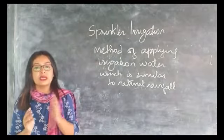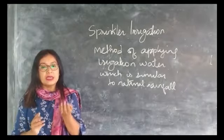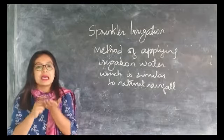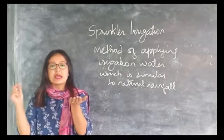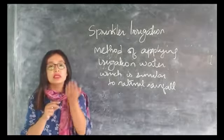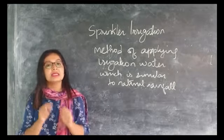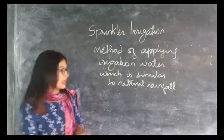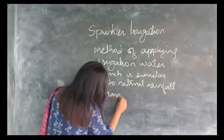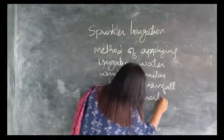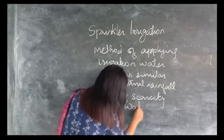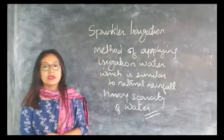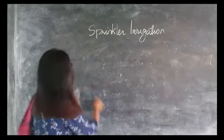Sprinklers can also be mounted on moving platforms that are connected to the water source. Basically, sprinkler irrigation is done in areas having scarcity of water. This is one of the major methods of irrigation.